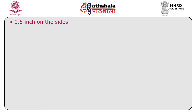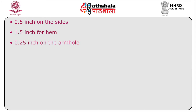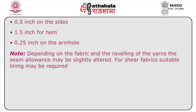Seam allowances: 0.5 inches on the sides, 1.5 inch for hem, and 0.25 inches on the armhole. Please note that depending on the fabric and the raveling of the yarns, the seam allowance may be slightly altered. For sheer fabrics, suitable lining may be used.